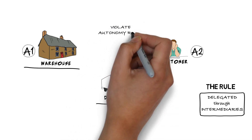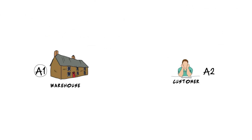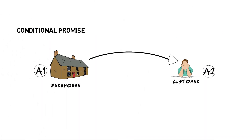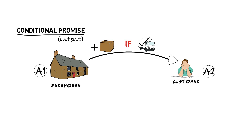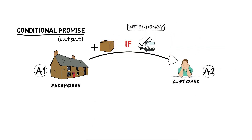So how can this work? The best the warehouse can do is to make a conditional promise — to inform about its intent, freely admitting the things it doesn't control. "I promise you delivery of the package, if the delivery agent keeps its promise to deliver." It's easy to see that a conditional promise is not a full promise, because it has a dependency which may or may not be promised separately.